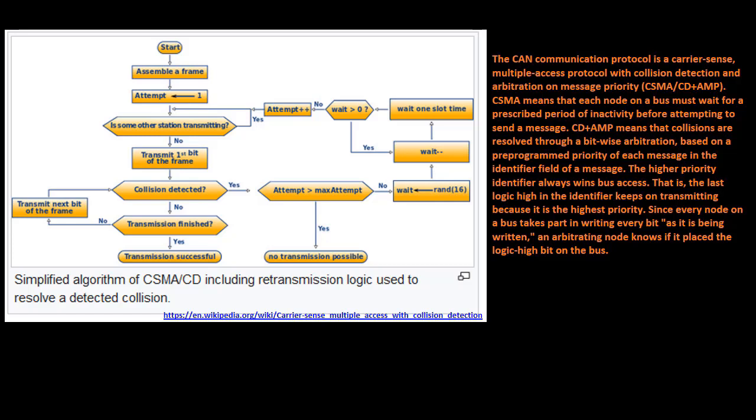That is, the last logic high in the identifier keeps on transmitting because it is the highest priority. Since every node on a bus takes part in writing every bit as it is being written, an arbitrating node knows if it placed the logic high bit on the bus.